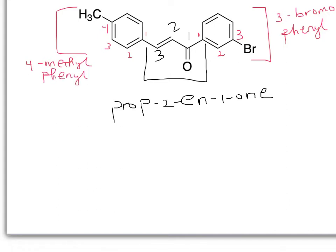Now we just put those names together. So this one goes first because it's a B, so B before M. So it's on the one side, so it will be one, three-bromophenyl.